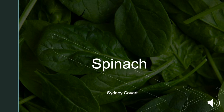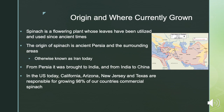I was assigned spinach for this presentation, and that is the common name and basically the only name that is used. Spinach is a flowering plant whose leaves have been utilized since ancient times. Its origin is in ancient Persia, in the surrounding areas which today is known as Iran, and it is still commonly used in their cuisine today in that part of Central Asia. From Persia it was brought to India, from India to China, and from there it spread out to the rest of the world.